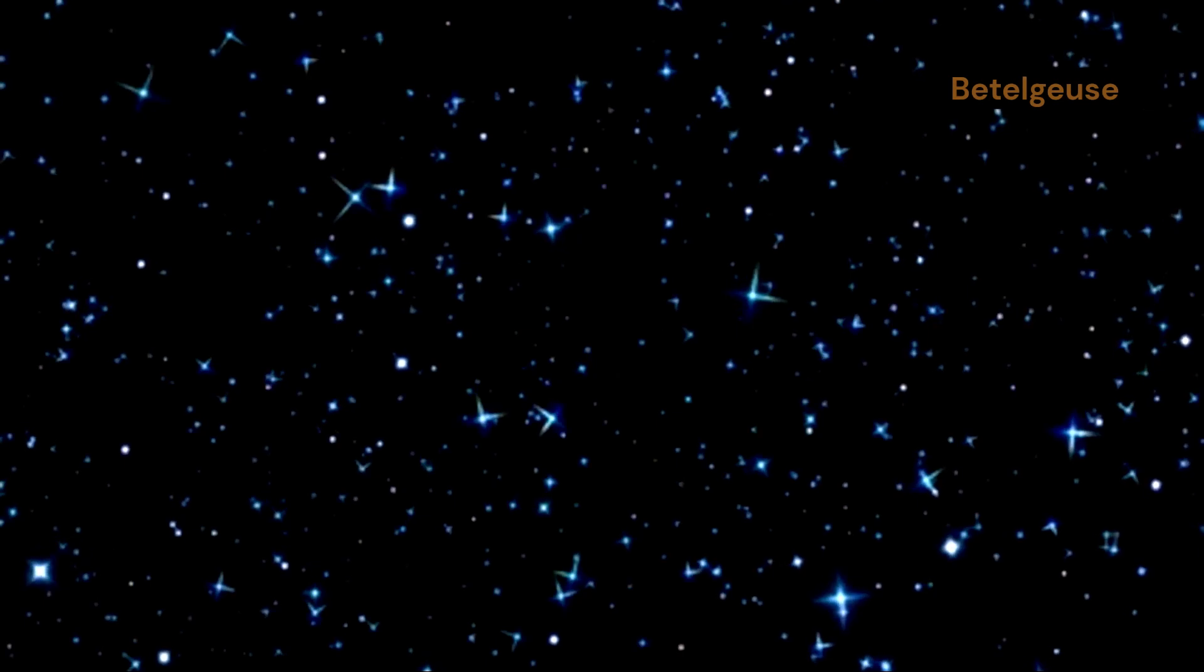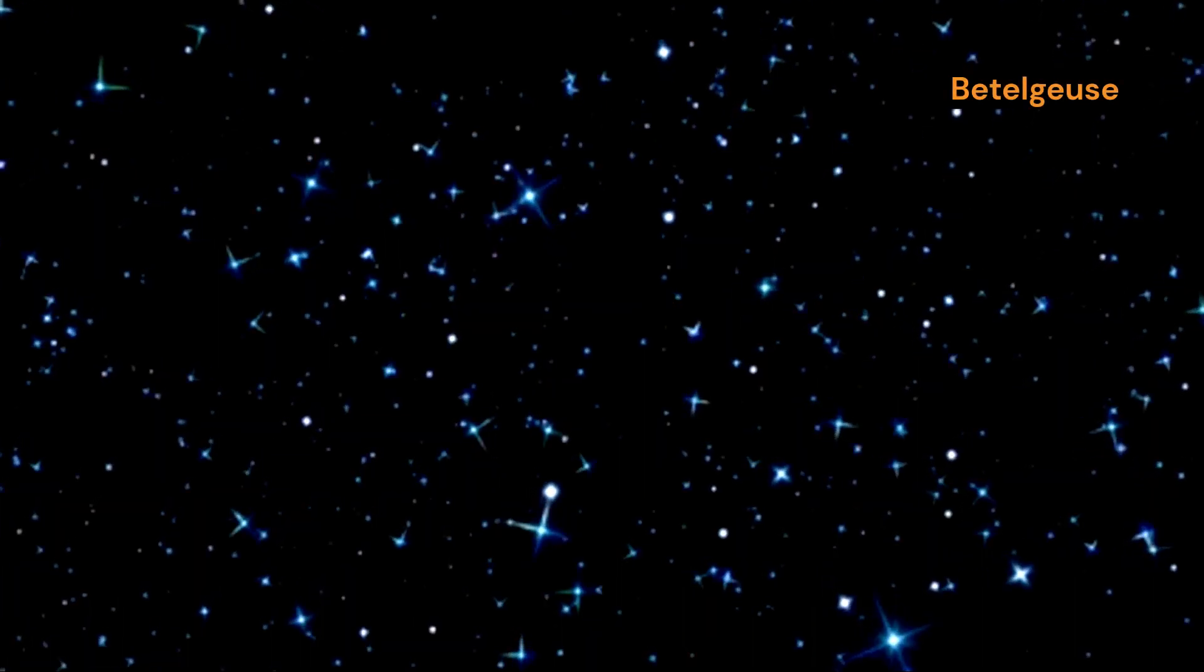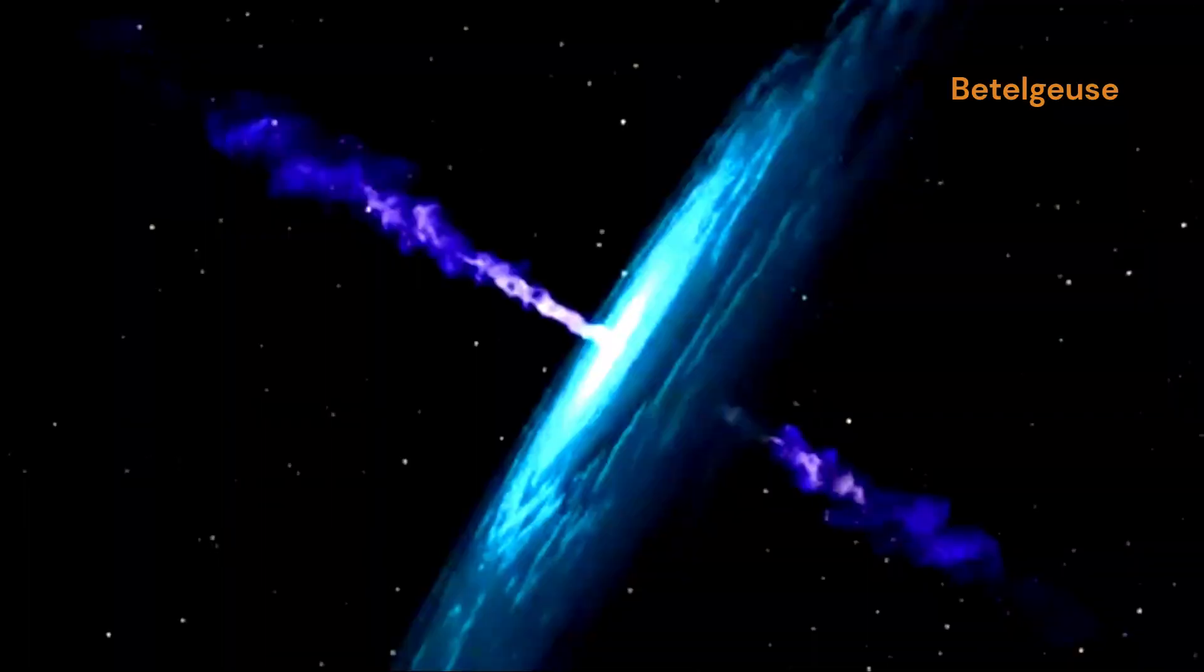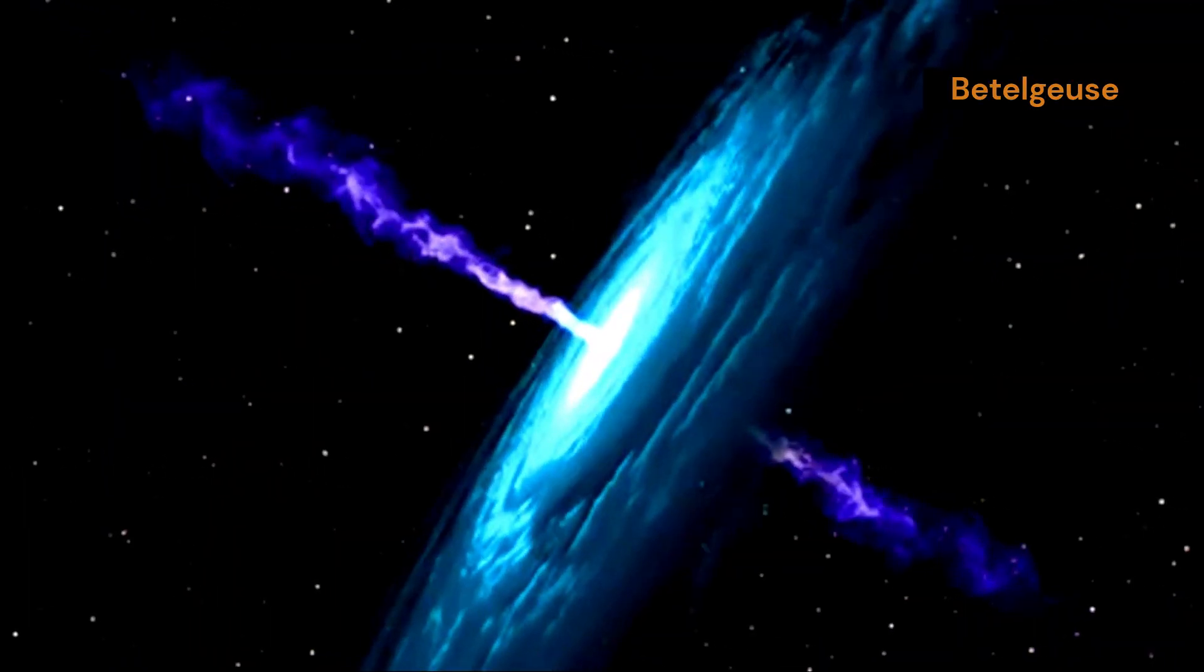Convection doesn't just happen in pots of water, it plays a crucial role in the lives of stars. Inside Betelgeuse, a red supergiant star, convection is happening on a colossal scale. Giant plumes of hot gas rise from the core, carrying energy outward towards the surface. This energy transfer is vital for the star's life cycle.